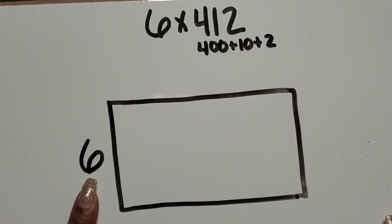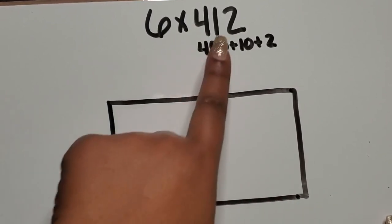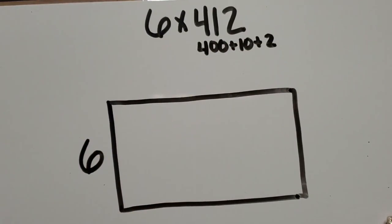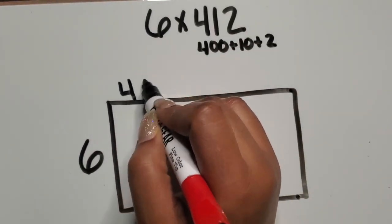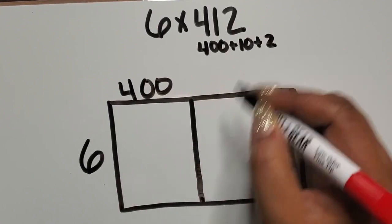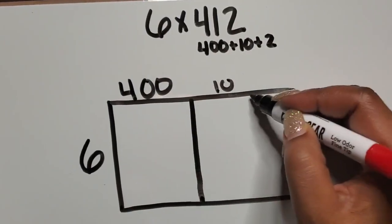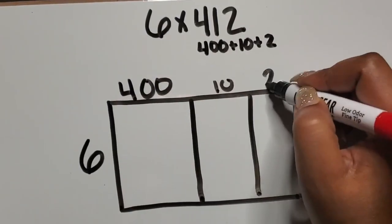Here I'm writing the number to represent the rows. Again, 412 is the amount in each row, so I'm going to start by writing my 400, then I have 10, then I have 2.